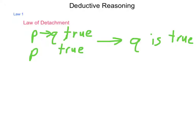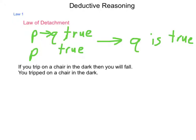A couple of examples to examine. First, if you trip on a chair in the dark, then you will fall. That is our conditional. The fact that we know is that you did trip on a chair in the dark. The conclusion that can be reached is that you have fallen, or you did fall. So our P statement held true, therefore the Q has to be true. There's no way around it.